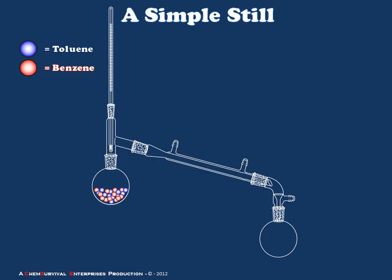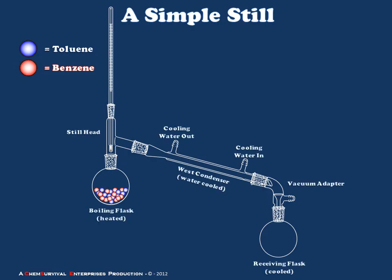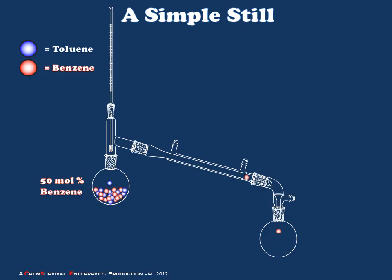To look at the overall simple still as it operates: we built our simple still by attaching a boiling flask to a still head, which diverts the flow of gas into a west condenser, and that liquid then drains through the vacuum adapter, ultimately landing in the receiving flask where it is collected. If we begin with a mixture of 50 mole percent benzene, our calculations based upon Raoult's, Dalton's, and Ideal Gas Laws lead us to the prediction that what will accumulate in the receiving flask is 80 mole percent benzene. Over time, we will collect a usable amount of our enriched benzene sample.